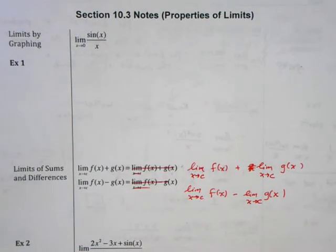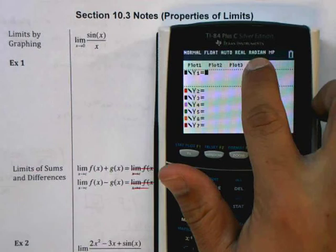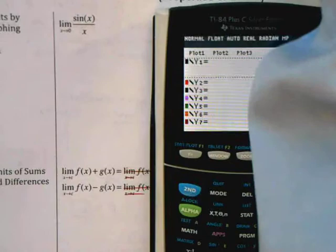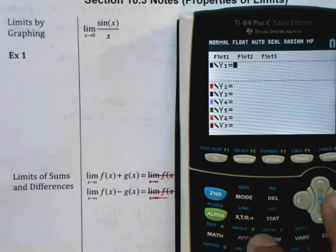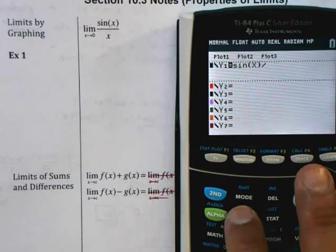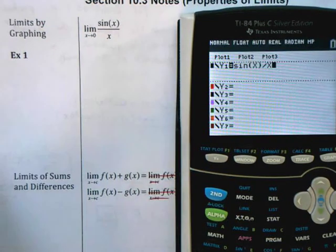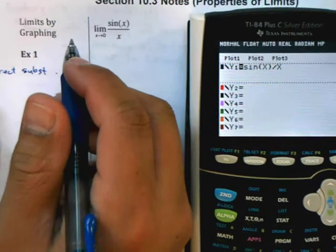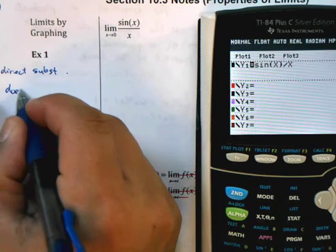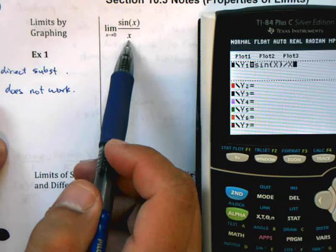You can see from the theme here this is limits by graphing. I'm going to take my graphing calculator and make sure that it's in radian mode. We're going to graph sin(x) divided by x. One thing I want to note here is that we cannot use direct substitution - it does not work because you end up with a division by zero.